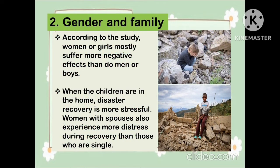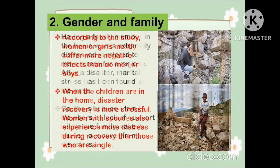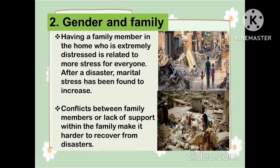The next factor underlying disaster is gender and family. According to studies, women or girls mostly suffer more negative effects than do men or boys. When children are in the home, disaster recovery is more stressful. Women with spouses also experience more distress during recovery than those who are single. Having a family member in the home who is extremely distressed is related to more stress for everyone. After a disaster, marital stress has been found to increase. Conflicts between family members or lack of support within the family make it harder to recover.